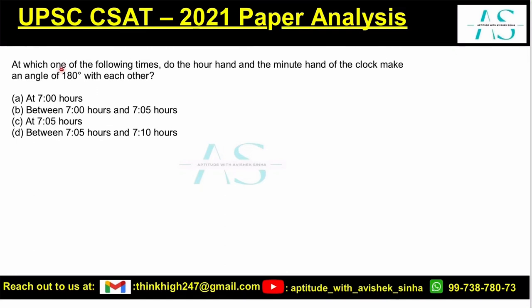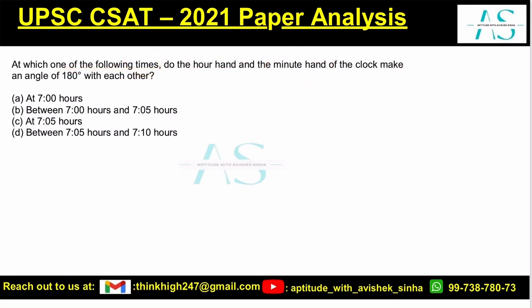At which one of the following times do the hour hand and the minute hand of the clock make an angle of 180 degrees with each other? We have four options of the time. This is a typical question from the logical reasoning topic, clocks. One of the methods to solve this is the formula method.